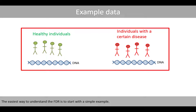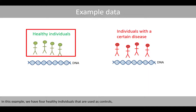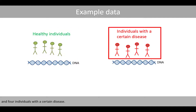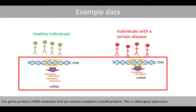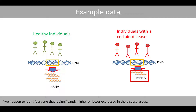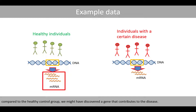The easiest way to understand the false discovery rate is to start with a simple example. In this example, we have four healthy individuals used as controls and four individuals with a certain disease. To identify the cause behind the disease, one can identify a gene in the human genome that might differ between healthy individuals and people with the disease. Our genes produce mRNA molecules that are used as templates to build proteins — this is called gene expression. If we identify a gene that is significantly higher or lower expressed in the disease group compared to the healthy control group, we might have discovered a gene that contributes to the disease.